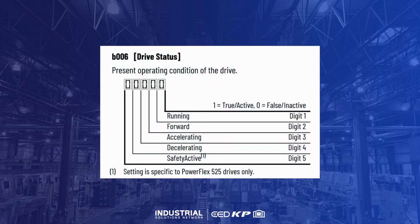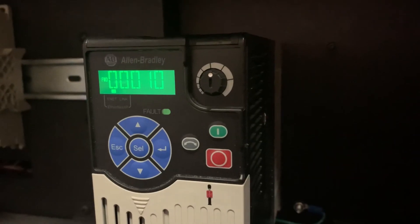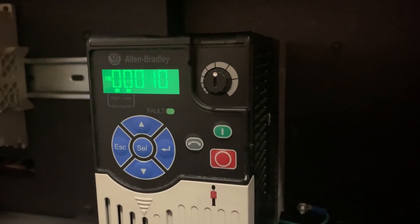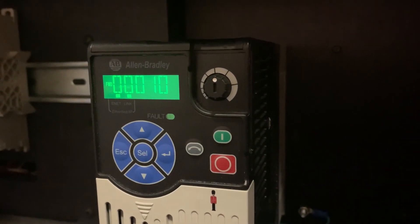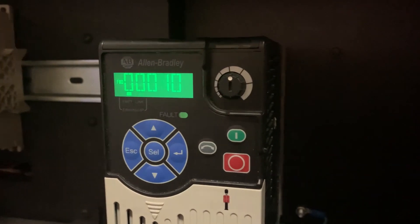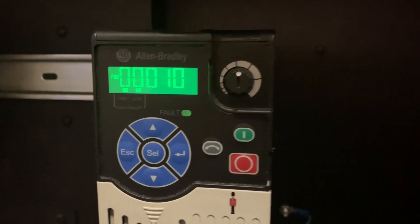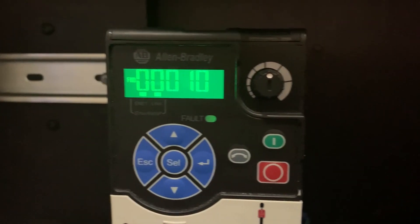Parameter B6 will provide you with the current drive status. The series of ones and zeros correspond to what the drive is currently doing. Mismatches between what is displayed and what is actually happening can provide clues as to what may be wrong.